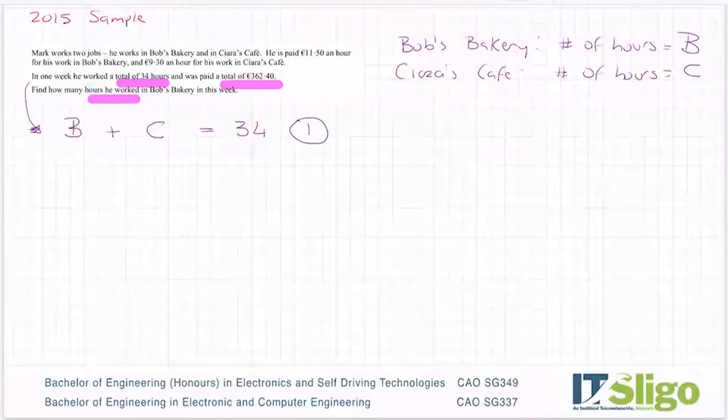Now, the next one is let the money equal the money. So in Bob's Bakery, he's paid 11.50 per hour. So no matter how many hours he works, he's going to get paid 11.50 per hour. So that's 11.50 by B or 11.50B.